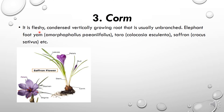Corm: it is also fleshy underground stem. All underground parts are fleshy because they have stored food material. It is a fleshy, condensed, vertically growing stem that is usually unbranched. Examples include elephant foot yam, taro, and saffron — also called 'zaffron' in Urdu. The corm is swollen and has vertically present flowers and leaves.